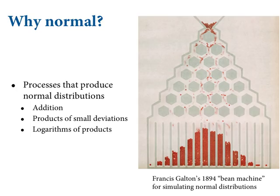The kinds of processes in nature that produce a normal distribution involve addition. Addition is the mathematical function where when you make a composition out of things, order doesn't matter. Any process in nature that makes compositions where the order that things enter doesn't matter is going to tend to produce bell curves from aggregations. Lots of things are approximately addition — so you get really good approximations of Gaussian distributions under a wider range of phenomena. For example, products of small deviations are also approximately addition.